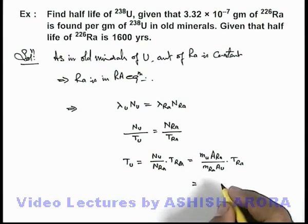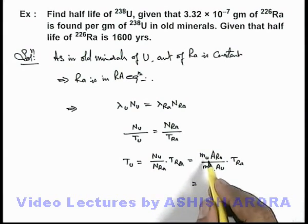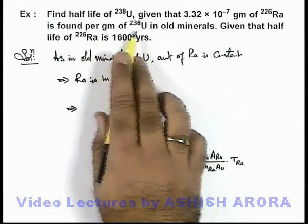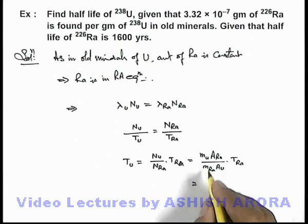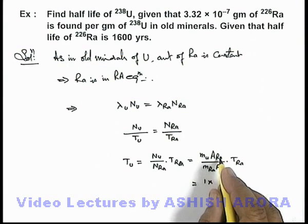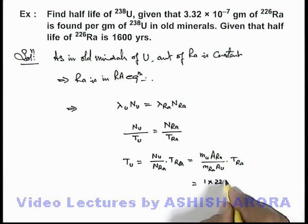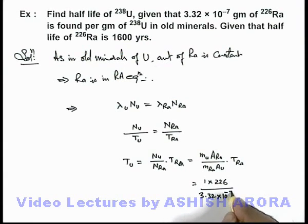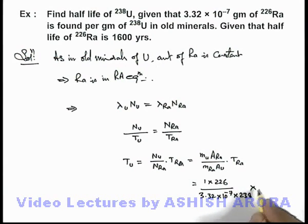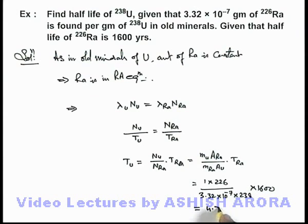Now when we substitute the values — per gram of uranium this much radium is present, so we take the mass of uranium to be 1 gram — we get: (1 × 226) divided by (3.32 × 10⁻⁷ × 238), multiplied by 1600 years. On simplifying, we get 4.7 × 10⁹ years.